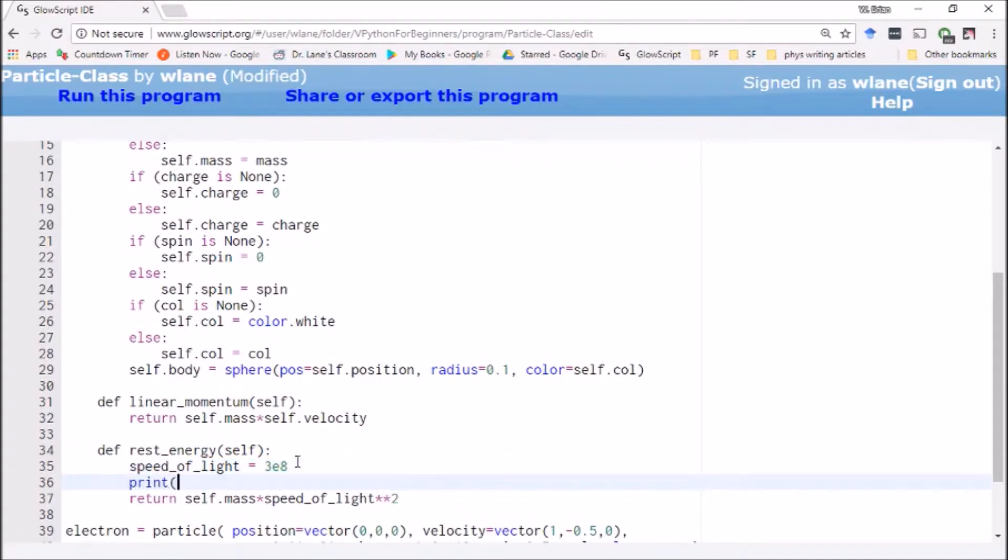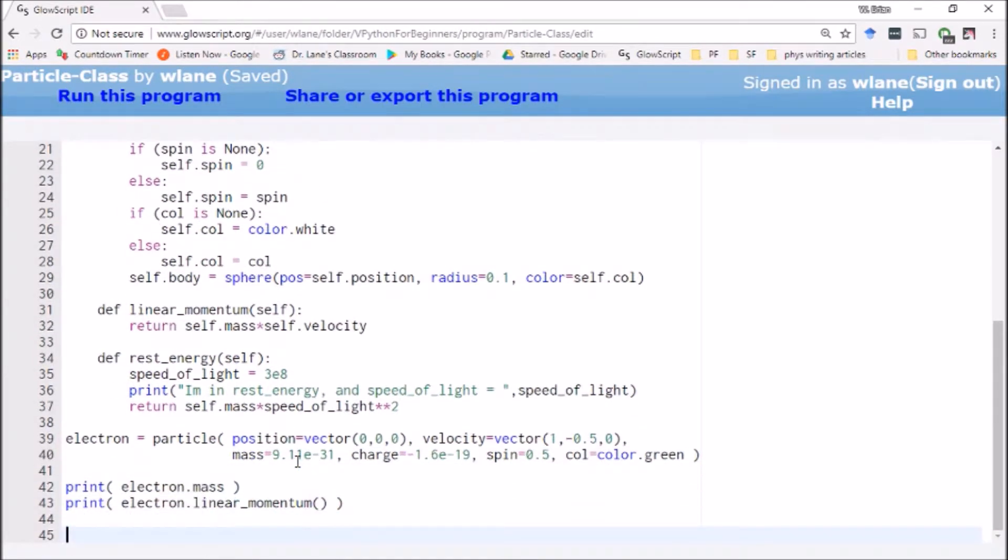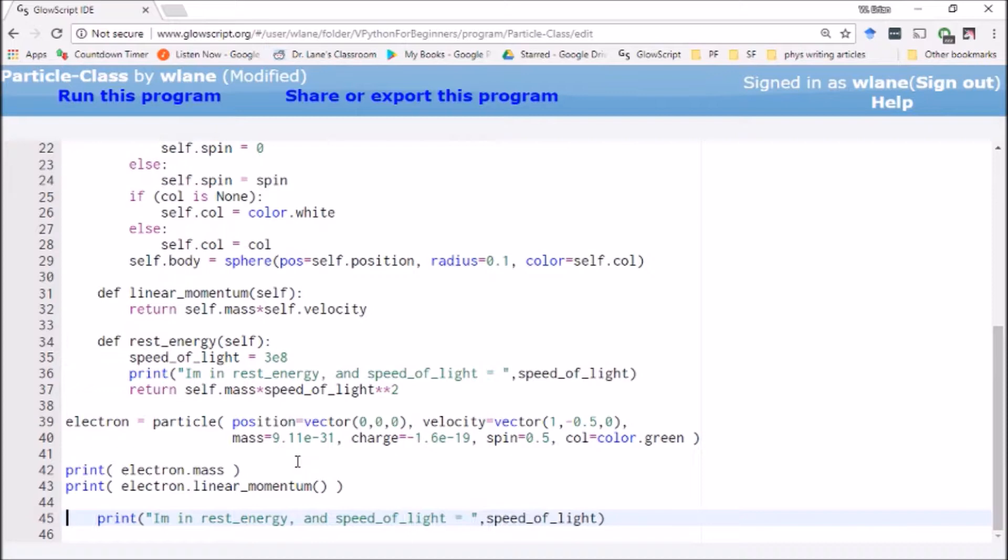Let's give this thing a print command. Say I'm in rest energy and speed of light equals, and then we'll have it print the value for speed of light. Now what I'm going to do, I'm going to copy that. I'm going to come down here to the end and I'm going to have this thing print I'm in rest energy and speed of light equals speed of light.